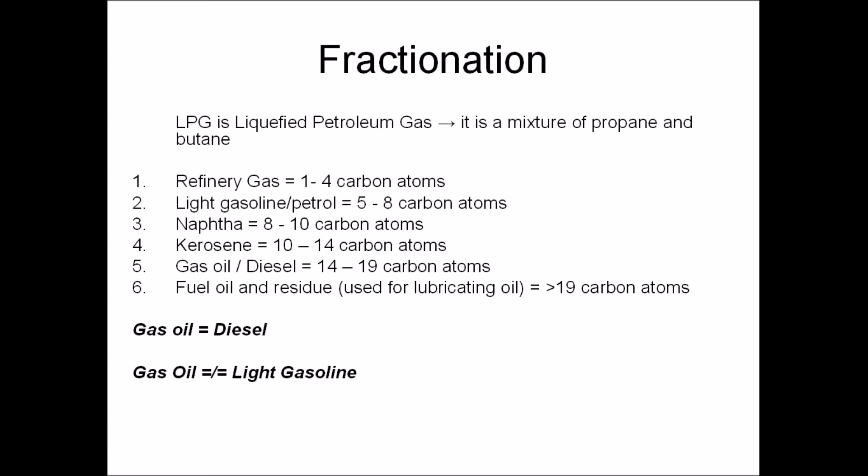There are six fractions in the fractionating tower, each with a different number of carbon atoms. Refinery gas is used for bottled gas (LPG). Gasoline is used for motor fuel, petrol. Naphtha is used for making chemicals and petrol. Kerosene is jet fuel. Gas oil is used for motor fuel — don't confuse gas oil with gasoline, they're really different things.